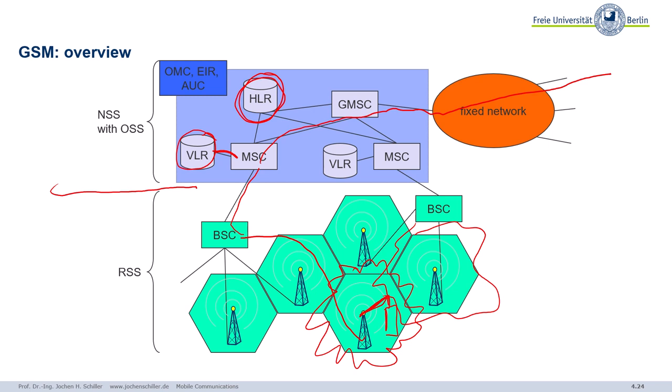Each operator has to set up such an infrastructure in a country. Now, depending on the regulation, sometimes operators might share antenna systems, sometimes not. There are advantages and disadvantages for this — for example, sharing is cheaper, but in case of a failure you will not have redundancy by simply using the other operator's network.